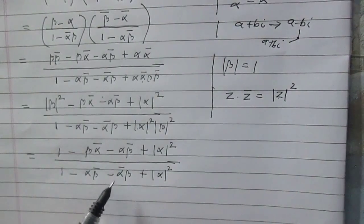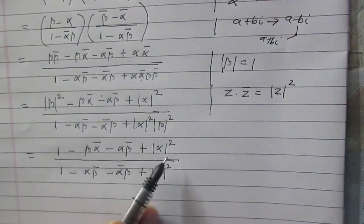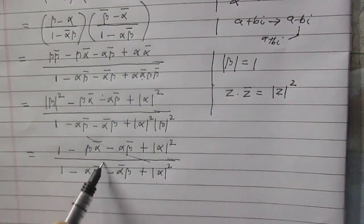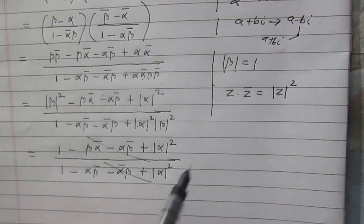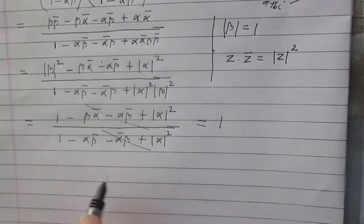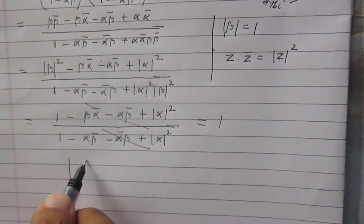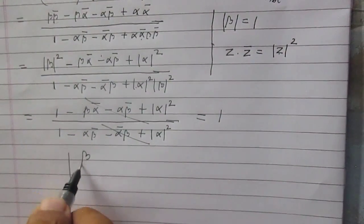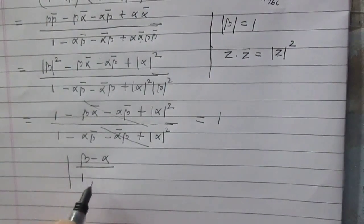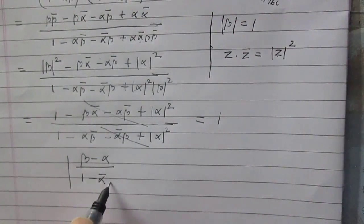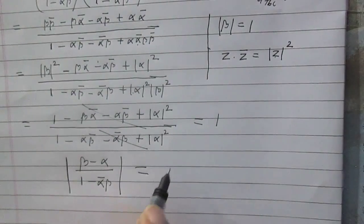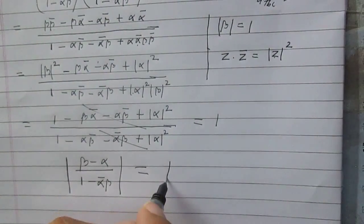You see that both the numerator and denominator are the same, so we can cancel them and the final result is 1. So finally, the value of (beta minus alpha) whole divided by (1 minus alpha bar times beta), modulus, is equal to 1.